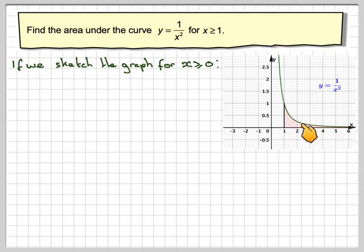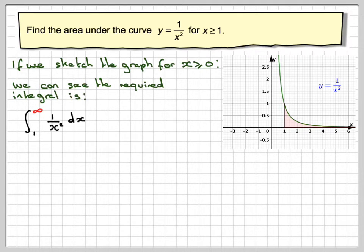So how can we actually find this area? We use a method known as improper integrals. The integral that we need to find is from the lower limit 1 to the upper limit infinity, which seems a bit strange, of 1 over x squared dx. Because this goes up to infinity, this is called an improper integral.